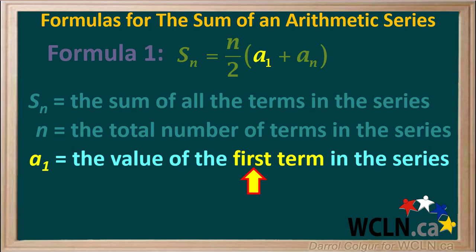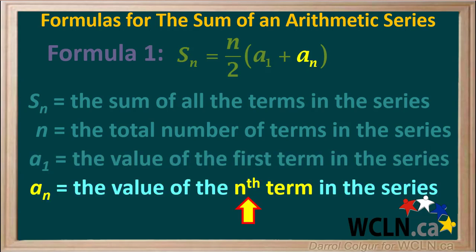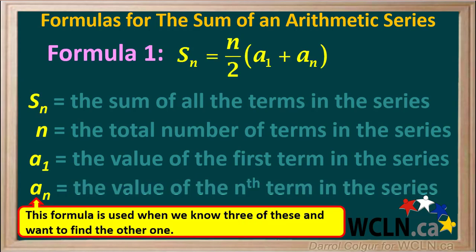A with a subscript 1 is the value of the first term in the series. And A with a subscript n is the value of the nth term in the series. If we want the sum of the whole series, then An is the value of the last term. This formula is used when we know three of these variables and want to find the fourth one.